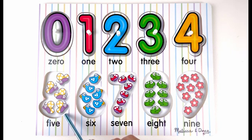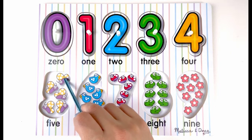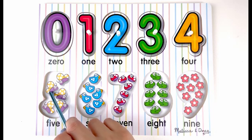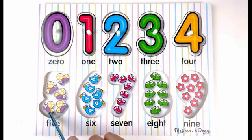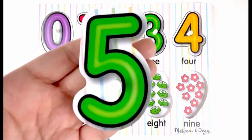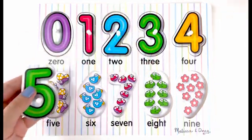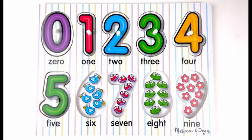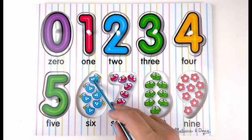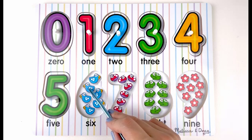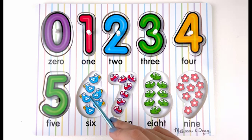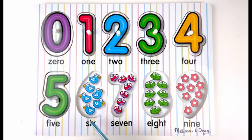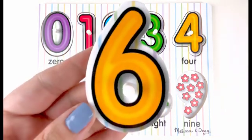How many butterflies do you see here? One, two, three, four, five. Five butterflies. Let's find out how many birds are here: one, two, three, four, five, six. Six birds. Number six.